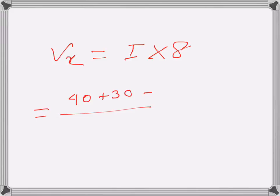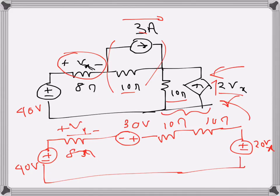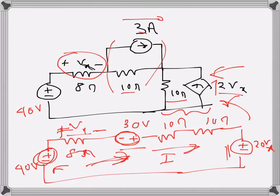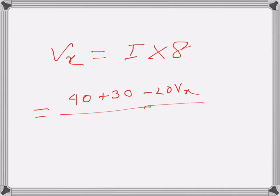So I will be: 40 plus 30 minus 20Vx, because the polarity of this voltage source is minus-plus, so the first two will be added and this one subtracted since it is in the other direction. The given polarity of Vx is in this direction, meaning the current is assumed to flow in that direction — I am assuming current I flows in this direction.